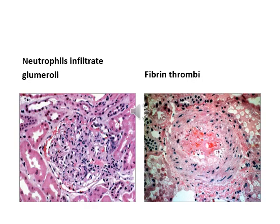In the right side photo, we can see fibrin thrombi within the efferent arterioles. And on the left side, we can see neutrophils — the acute inflammatory cells — infiltrating the vessels and capillaries of the glomeruli.